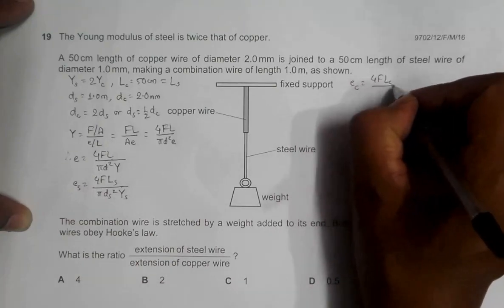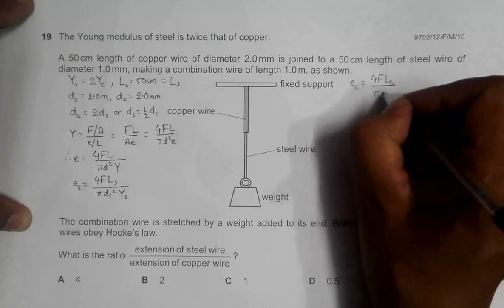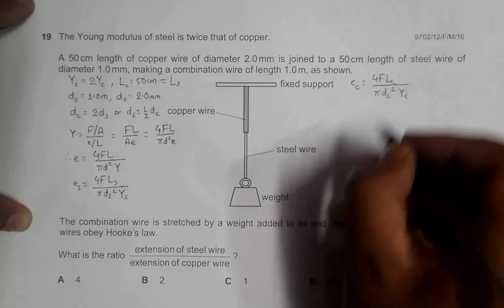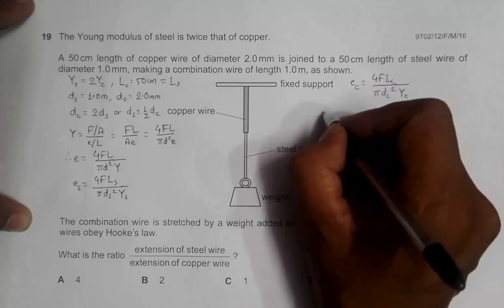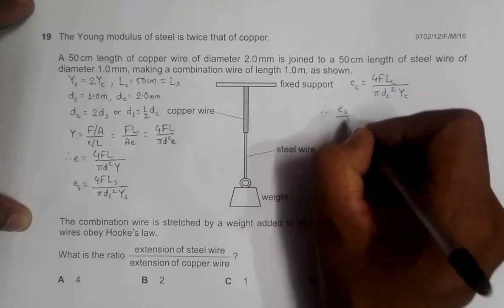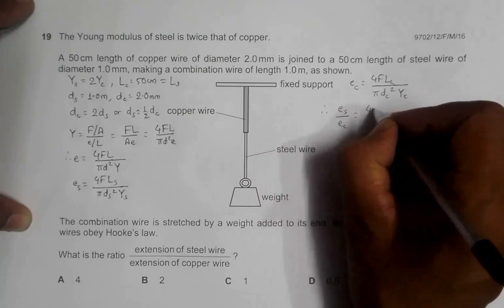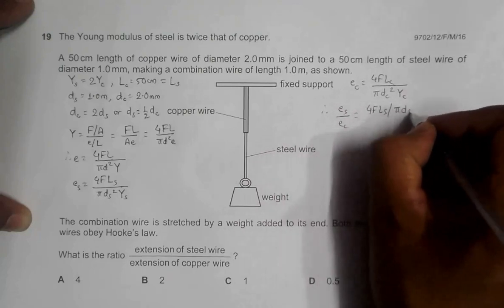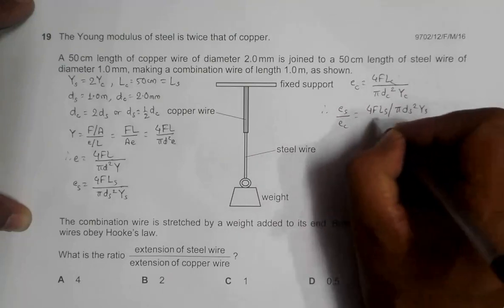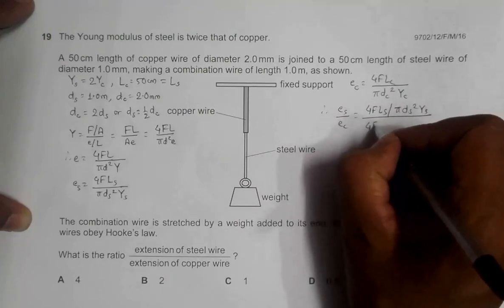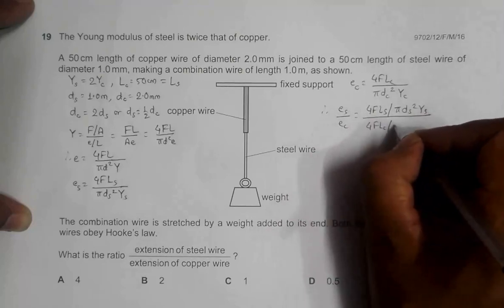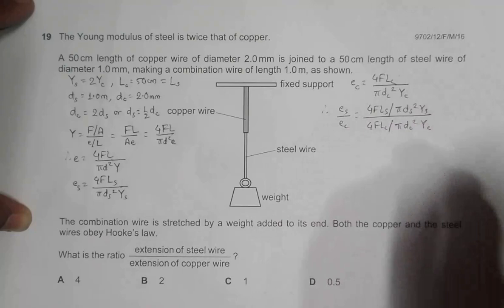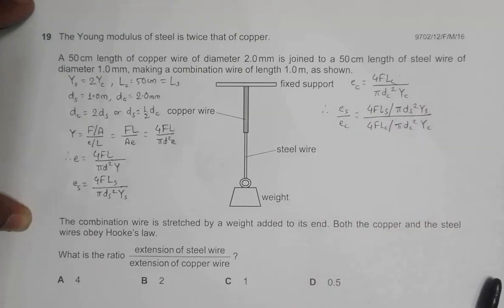So the ratio should be, therefore, ES by EC is equal to 4F LS by pi DS square YS whole divided by 4F LC divided by pi DC square YC.